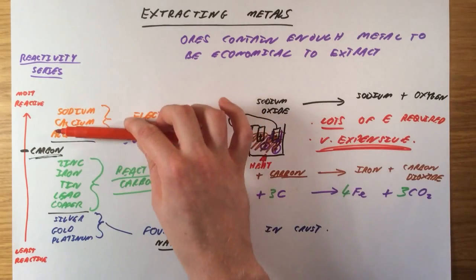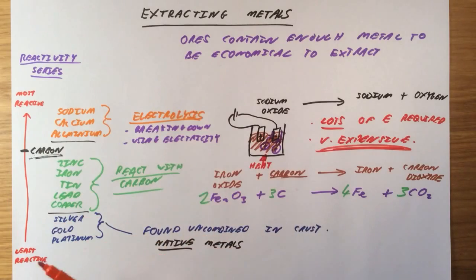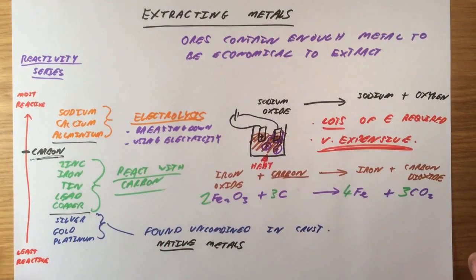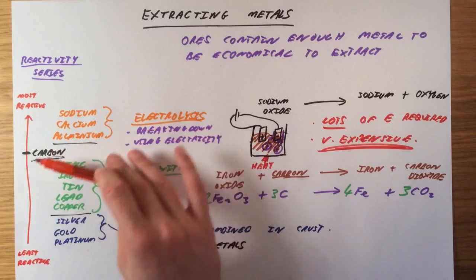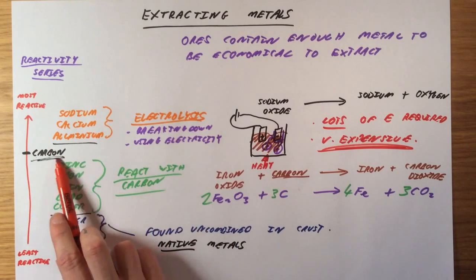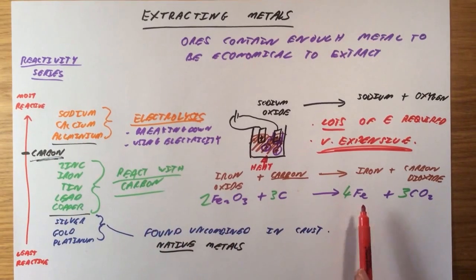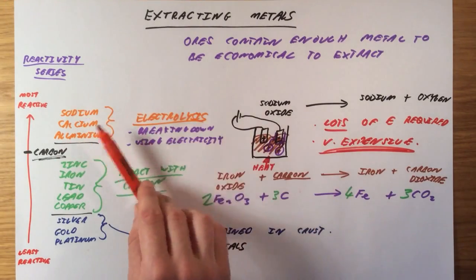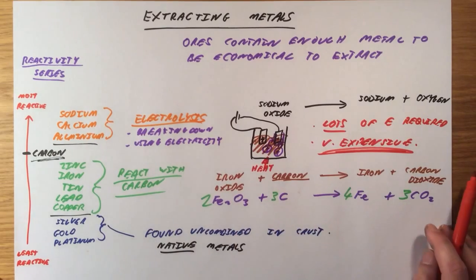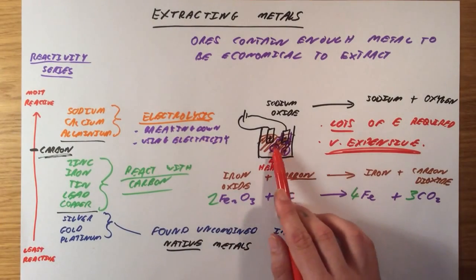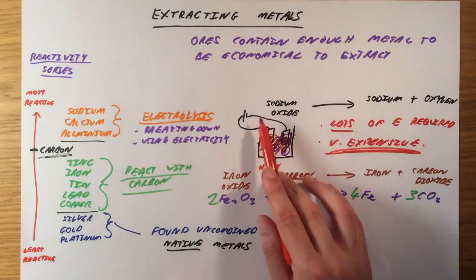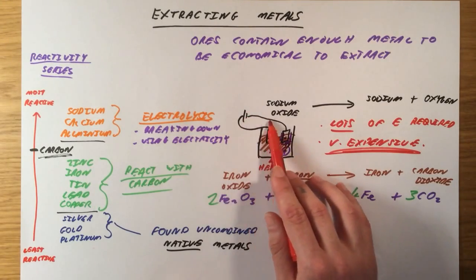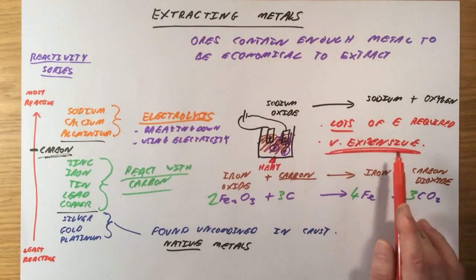So quick recap. We've got three kind of classes of metals. Very non-reactive ones, native metals are found uncombined in the crust. We can dig them straight out of the ground. Metals less reactive than carbon, we can react with carbon or reduce them using carbon to give us our pure metal. That's nice and cheap. It doesn't need a bit of heat, but nowhere near as much. As for these ones, with reactive metals, we have to use electrolysis, which is breaking down a compound using electricity. We need an awful lot of heat energy to melt the metal compound first. And then we have to use a lot of electricity, a direct current. So it's extremely expensive.